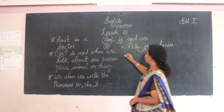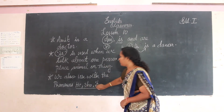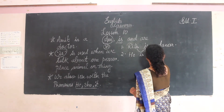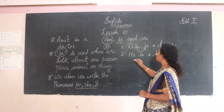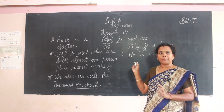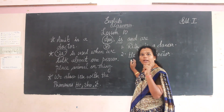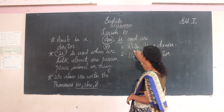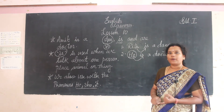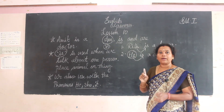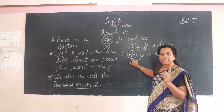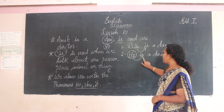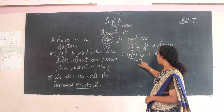Now let us see the second example with the help of pronouns — 'he', 'she', and 'it'. Second: 'He is a doctor.' He is a boy, a male — only one person. He is also a pronoun, he is a male and one person. So we have written 'is': 'He is a doctor.'